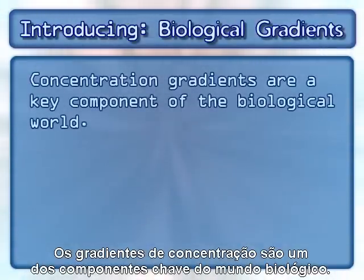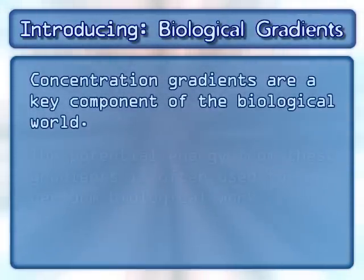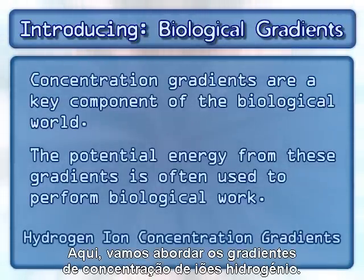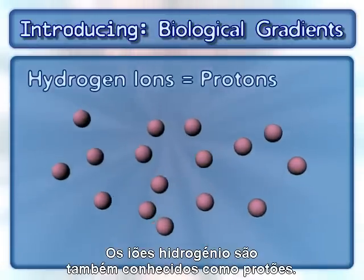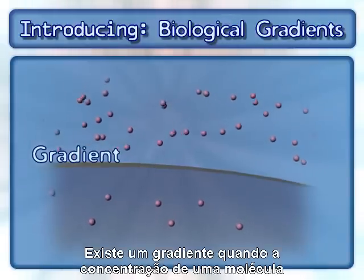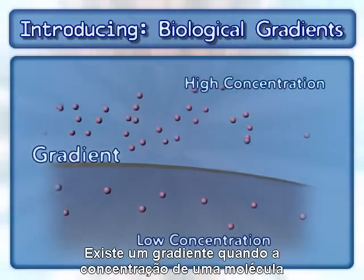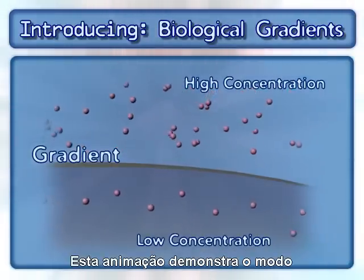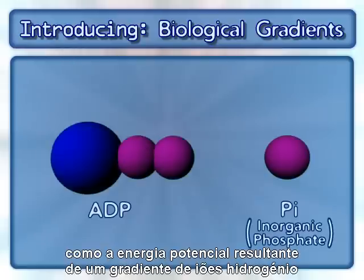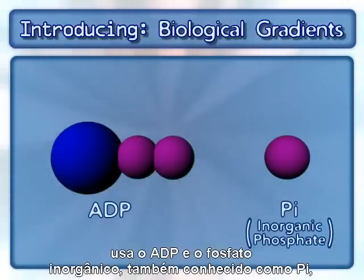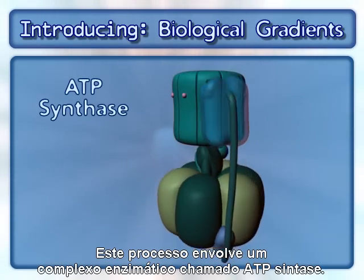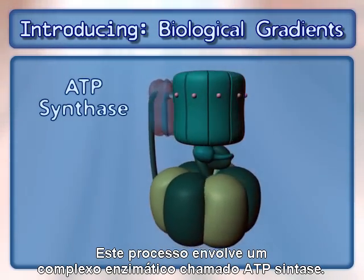Concentration gradients are a key component of the biological world. The potential energy from these gradients is often used to perform biological work. Here we will focus on hydrogen ion concentration gradients. Hydrogen ions are also known as protons. A gradient exists when there is a higher concentration of a molecule in one compartment compared to a neighboring compartment. This animation will demonstrate how the potential energy that results from a hydrogen ion gradient uses ADP and inorganic phosphate, also known as Pi, to synthesize ATP. This process involves an enzyme complex called ATP synthase.